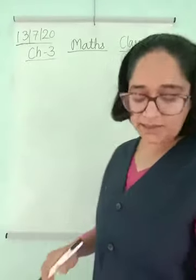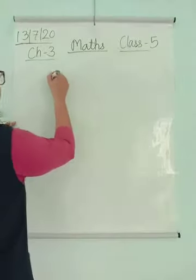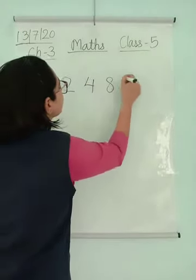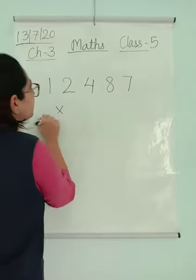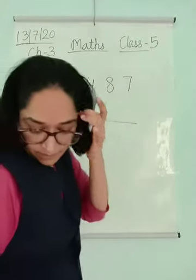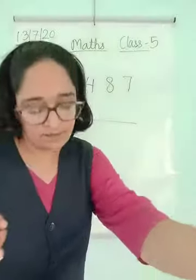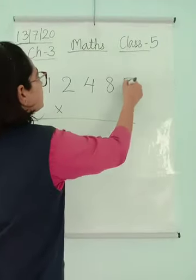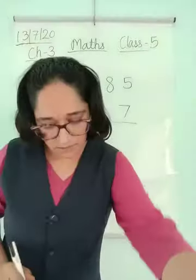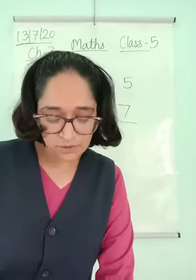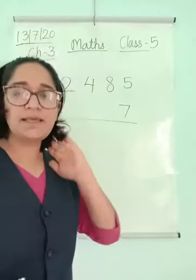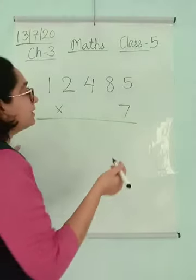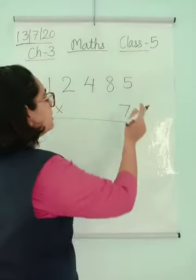So I am taking example 1: 12485 multiplied by 7. This is sum number 13. So let's solve this and see how you multiply a 5-digit number by a single digit. It is easy, isn't it?